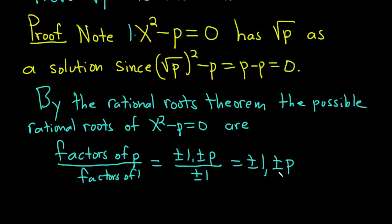However, the square root of p is not among this list, and the square root of p is a root. Therefore, the square root of p cannot be a rational number — therefore it must be irrational.